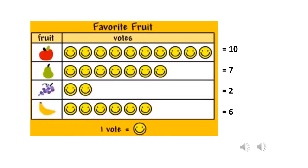In this picture graph, they're counting votes for favorite fruit: apple, pear, grape, banana. Whoever made this picture graph decided to use happy faces. So there are ten happy faces in the apple row, seven happy faces for pears, two for grapes, and six for bananas.